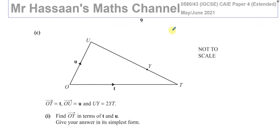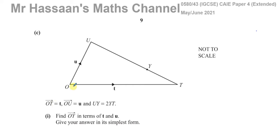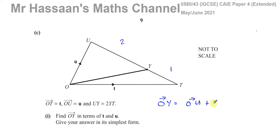Now for part C, which is vector geometry. It says OT is the vector t, OU is the vector u, and UY = 2 × YT. So UY is 2 parts and YT is 1 part — 3 parts altogether. Find O to Y in terms of t and u. O to Y equals O to U plus U to Y.